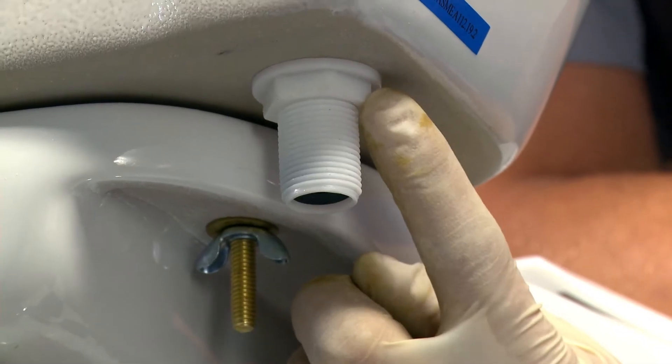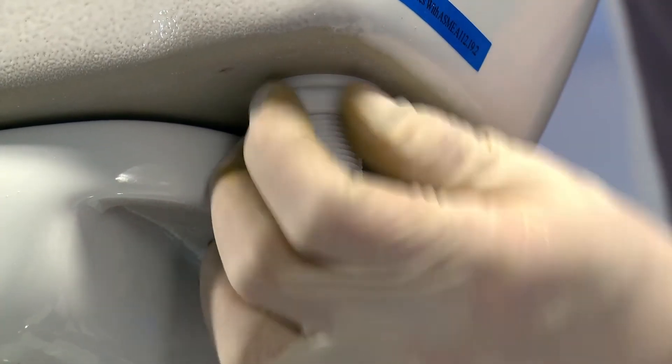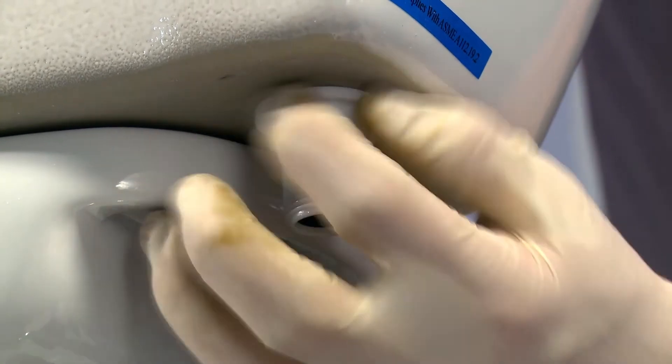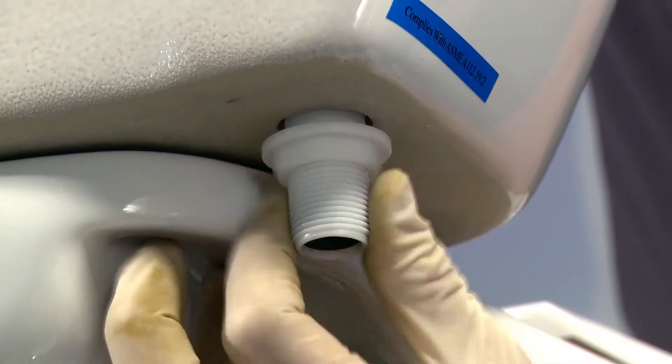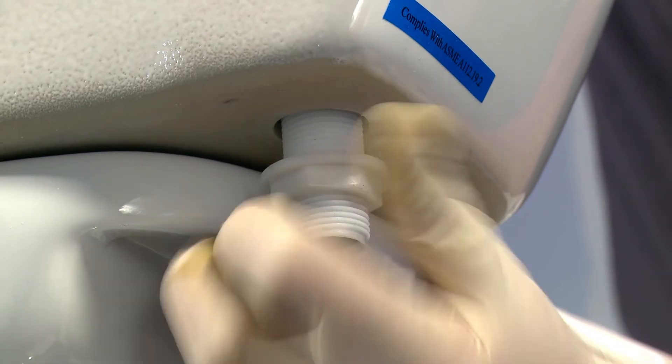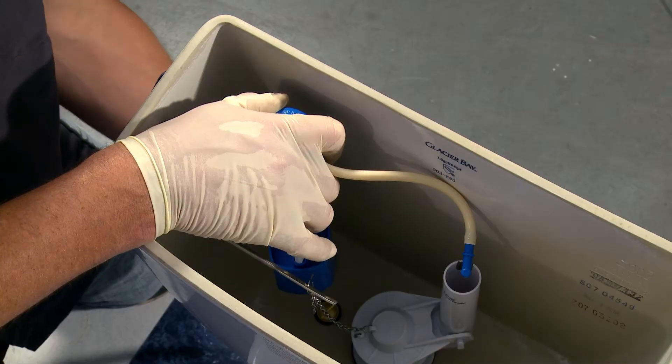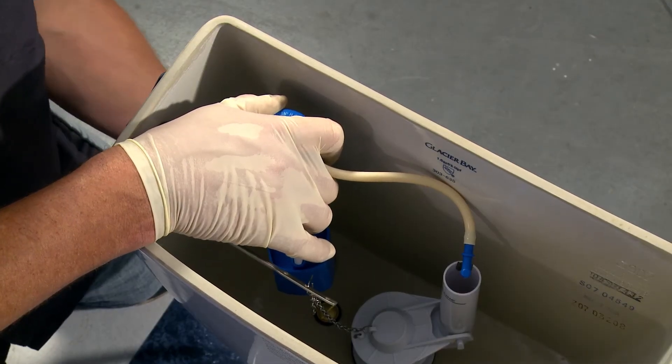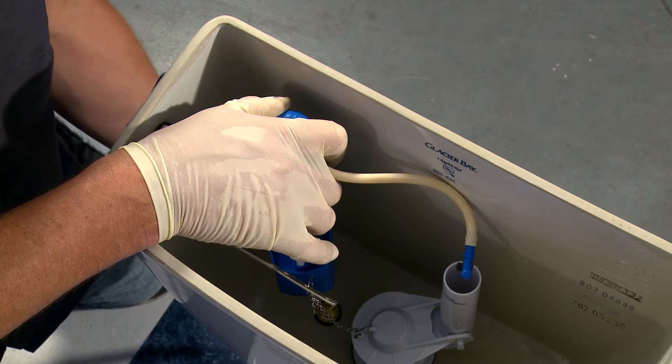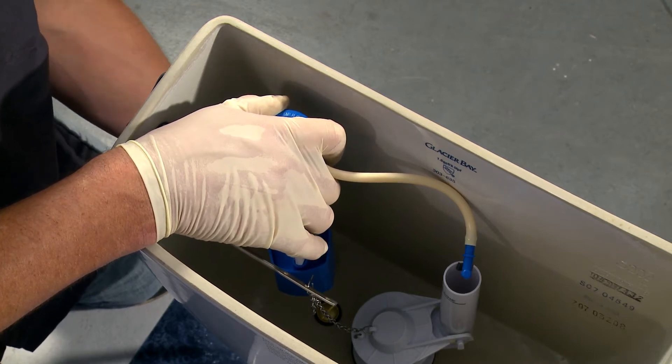Then you'll loosen the nut at the base of the fill valve. Sometimes you can do it by hand just by pushing down on the fill valve. Now if you're going to try and do a quick change, you want to have your new fill valve ready at this point. As soon as I get this one out, I'll show you how to prep the old one and then you would just swap them quickly.